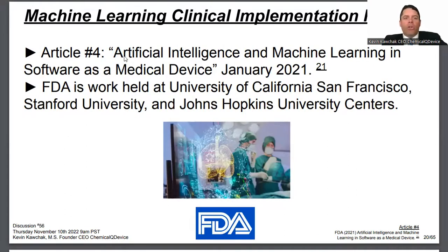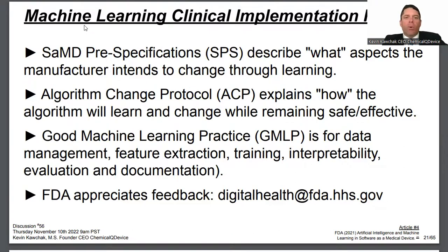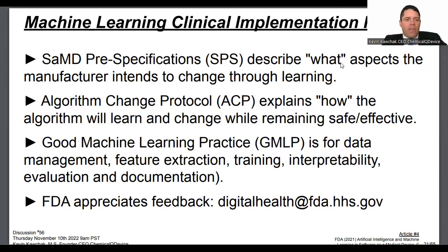Article number four: 'Artificial Intelligence and Machine Learning in Software as a Medical Device' or SAMD, from January 2021, with work done at UCSF, Stanford, and Johns Hopkins. Software as a Medical Device is key. The SPS describes what aspects the manufacturer intends to change through learning. The algorithm change protocol explains how the algorithm will learn and change while remaining safe and effective. GMLP — good machine learning practice — covers data management, feature extraction, training, interpretability, evaluation, and documentation.